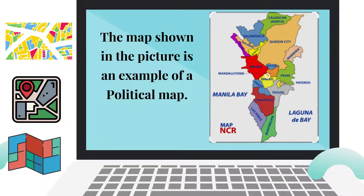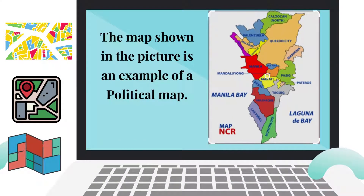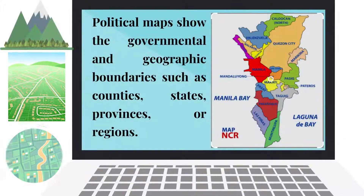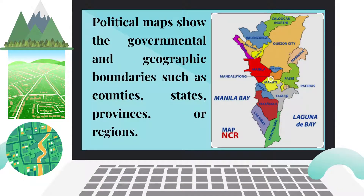The map shown in the picture is an example of a political map. A political map shows the governmental and geographic boundaries such as countries, states, provinces, or regions. The one on your screen is an example of a political map, which is a map of NCR that shows the different cities in NCR, or National Capital Region.